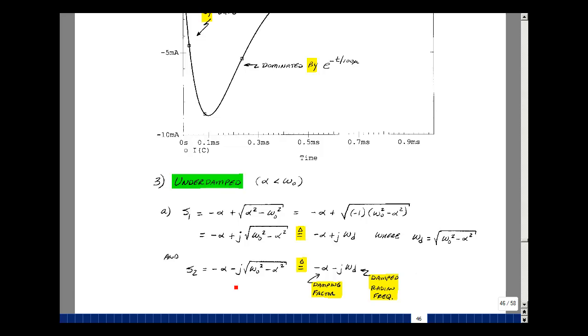Now, our term S2 looks like S1, we just have the opposite sign on the radical. The term alpha, we're going to refer to as a damping factor. We'll see why when we sketch the response versus time of our solution. And then this term is called a damped radian frequency. Again, it's the square root of the quantity omega-naught squared minus alpha squared.